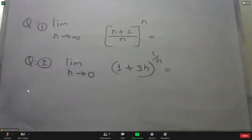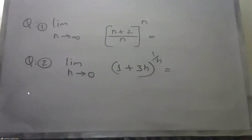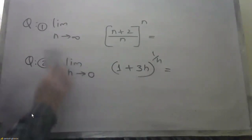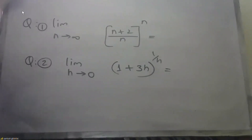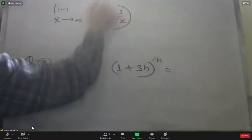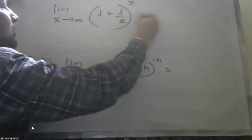Thank you for your question. This is a question about the definition of e. If you have the definition of e — the number e — then: 1 upon e, x to the power e, x to the power e is equal to e. That is, the limit as x approaches infinity of (1 + 1/x)^x equals e.